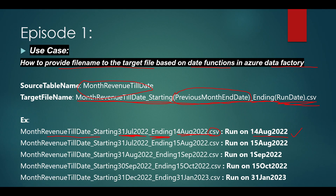From a business perspective, this file contains data starting from the last date of the previous month till today when the pipeline is running. If I run the pipeline tomorrow, August 15th, the file will show starting 31st July and ending 15th August. If I run on September 1st, the file name will show starting 31st August and ending 1st September.